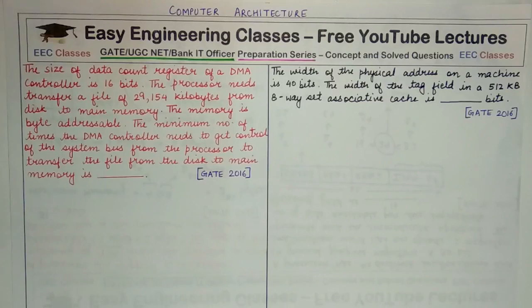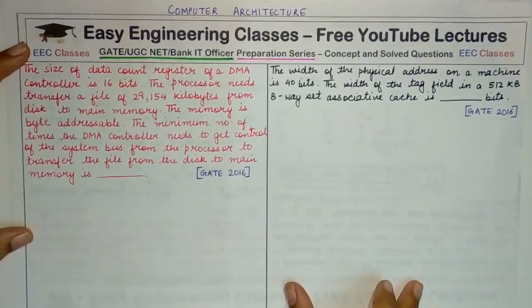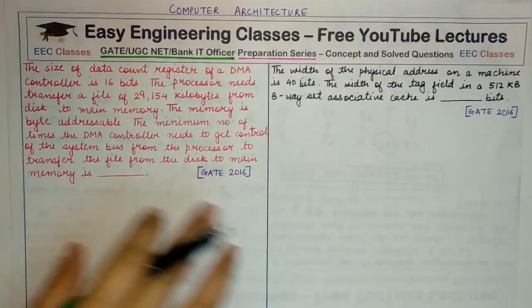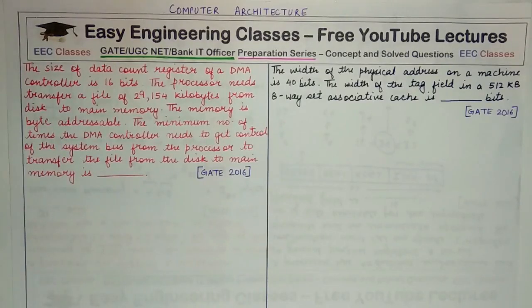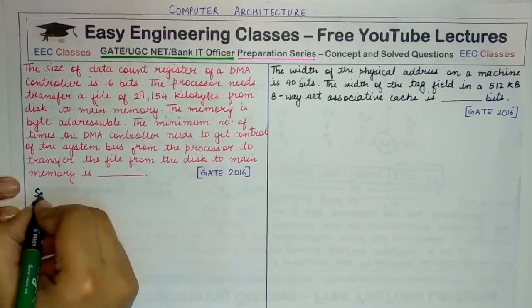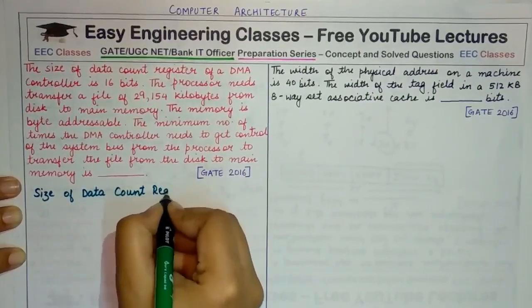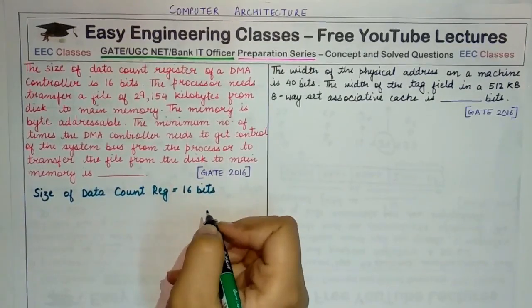Those were two easy questions based on computer architecture. Now the third question: the size of the data count register of a DMA (Direct Memory Access) controller is 16 bits. The processor needs to transfer a file of 29,154 kilobytes from the disk to the main memory. The memory is byte addressable. The minimum number of times the DMA controller needs to get control of the system bus to transfer the file is what we need to find.